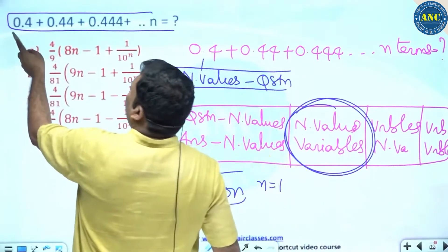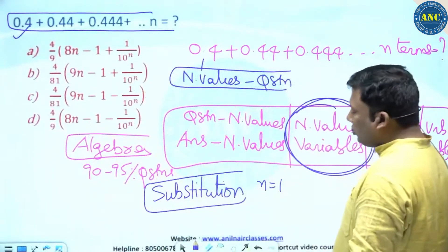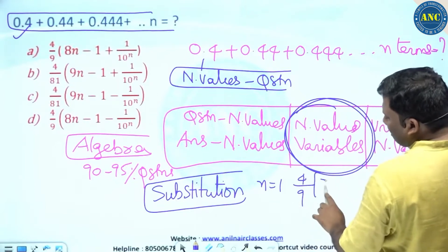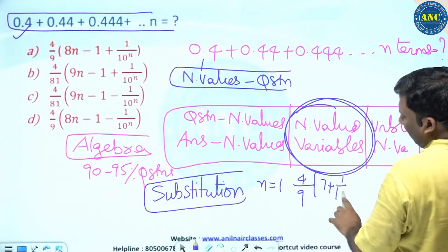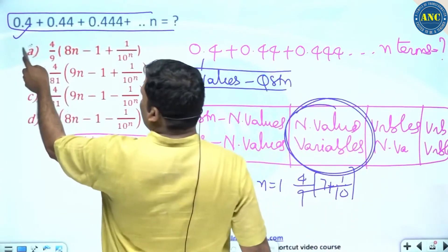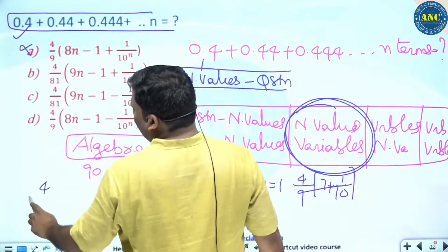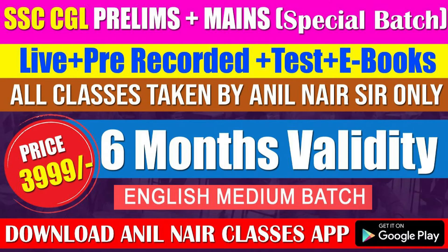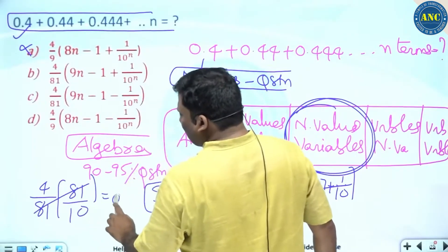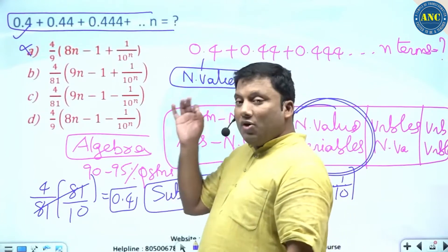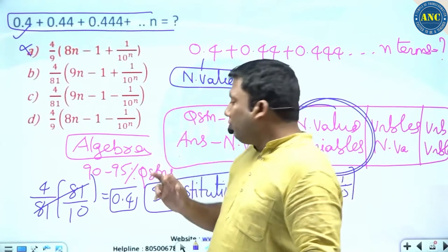Let me substitute n equal to 1. The first value should be 0.4. Testing option 1: 4/9 times (8 minus 1) = 7, plus 1/10 raised to 71 — 71 is not a multiple of 9, so option 1 is not possible. Testing option 2: 4/81 times (9 minus 1) = 8, plus 1/10 raised to 81 — 81 cancels, giving 4/10 = 0.4. Correct!